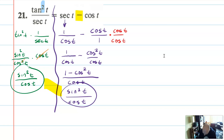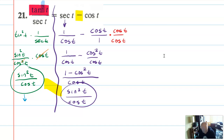You could probably continue working with either side and maybe use a Pythagorean identity to simplify further. There's probably an easier way using the tangent squared identity directly, but this way works just fine.